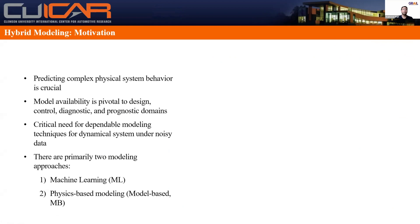Hybrid models — why do we need a new modeling paradigm when there are tons of existing ones? Coming from an engineering background, we know how important it is to predict complex system behavior. Applications in design and control rely heavily on model availability. The problem with existing machine learning models is that with scarce data they fail to generalize well beyond their seen environment, and show complete disregard towards physical laws. Physics-based models are quite difficult to build, rely heavily on domain expertise, and fail to imitate exact system behavior due to oversimplifying assumptions.